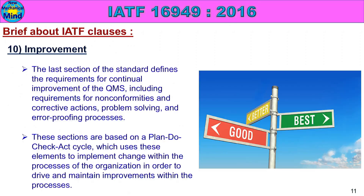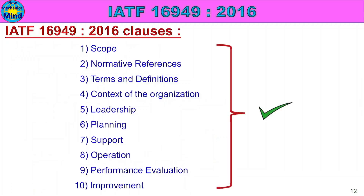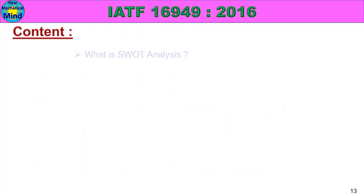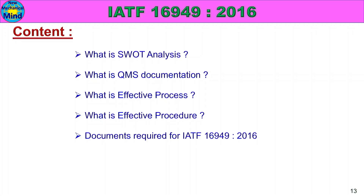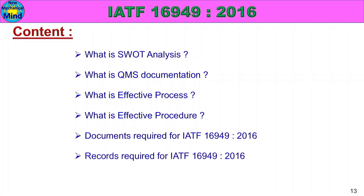We will see all the details. In this part, we will see the content: What is SWOT Analysis? What is QMS Documentation? What is Effective Process? What is Effective Procedure? Documents required for IATF 16949-2016, Records required for IATF 16949-2016, and APIs required for IATF 16949-2016.